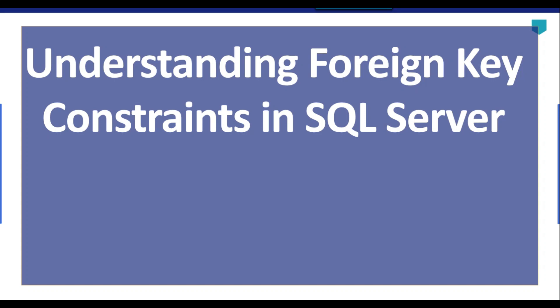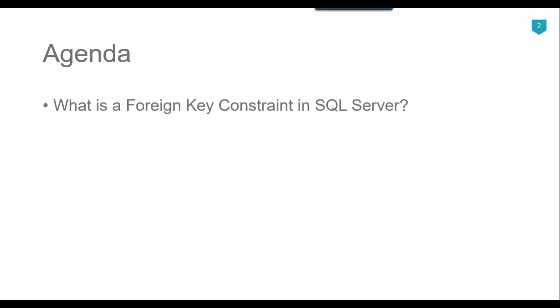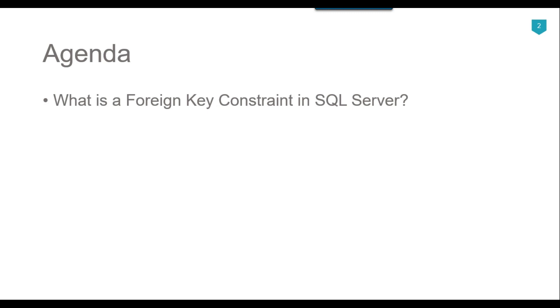Hi friends, my name is Akhil Ahmad and in this video tutorial we will look at understanding the foreign key constraints in SQL Server. A foreign key is a field in a table that refers to the primary key in another table, establishing a relationship between two tables. A foreign key constraint is a rule that enforces this relationship.